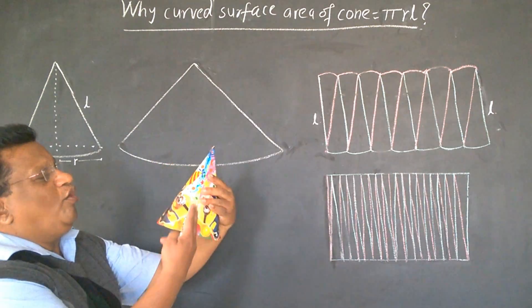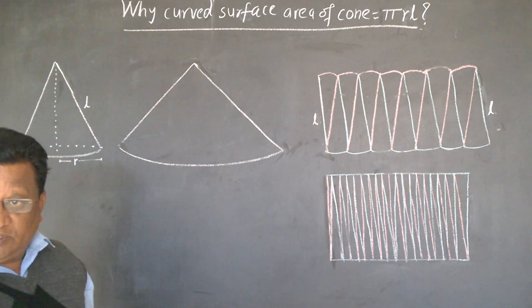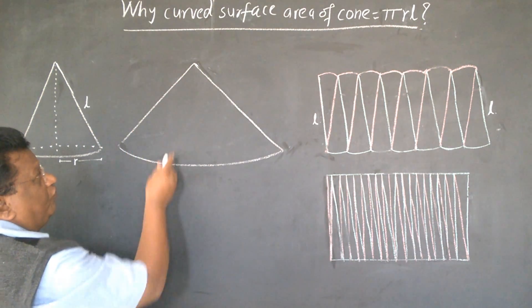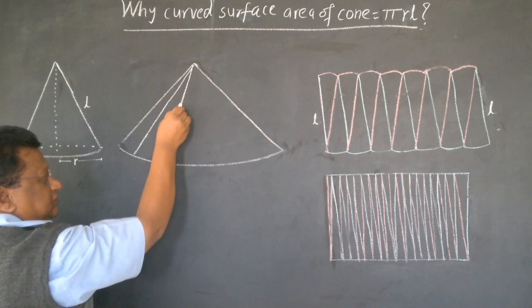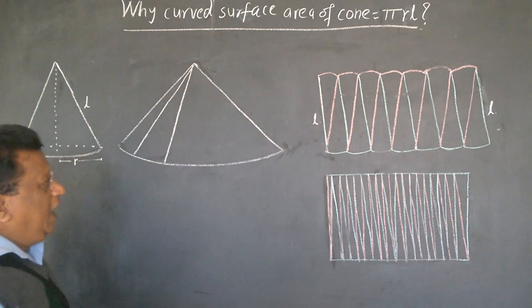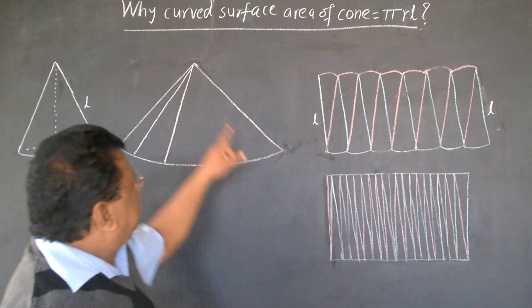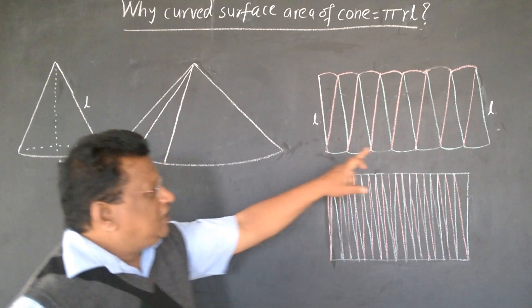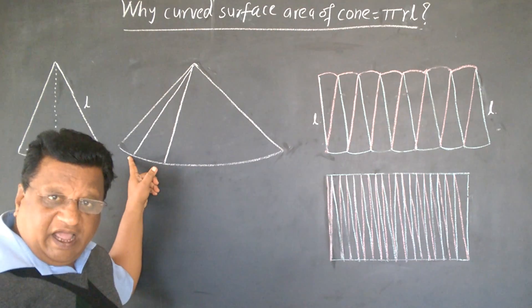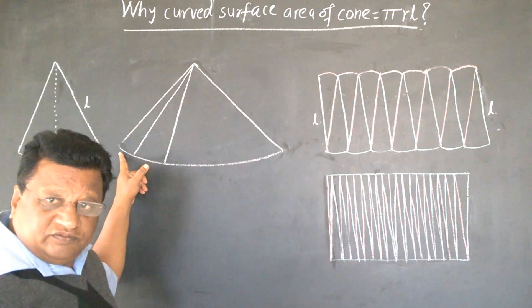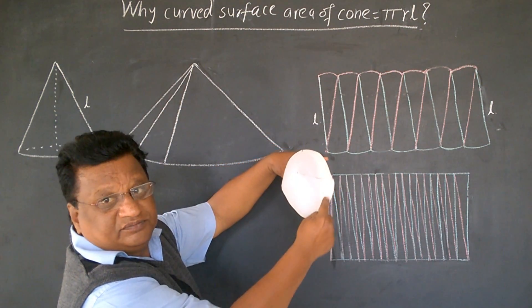Now, if I cut open this cone, it will look like this sector. If we draw segment like this, everywhere, and cut them, and arrange them in this manner, at that time, this is the slant height. And this portion, and this portion, though it looks as a length of r, but actually, it is the circular part.